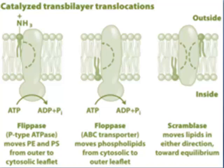The second one is the floppase. In this case, you need to remember the example: ABC transporters are examples of floppase proteins, and they move phospholipids from the cytosolic leaflet to the outer leaflet. Scramblases will move lipids in either direction towards equilibrium — that means in both directions.